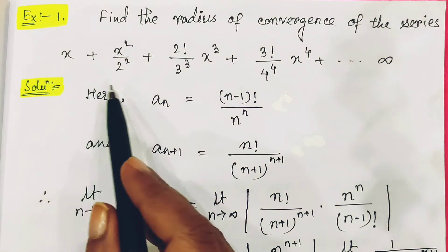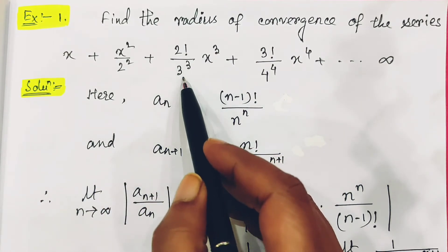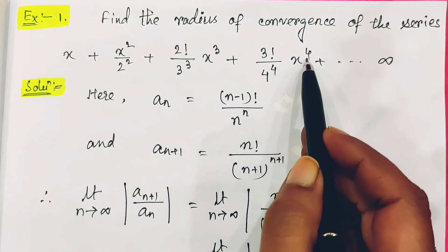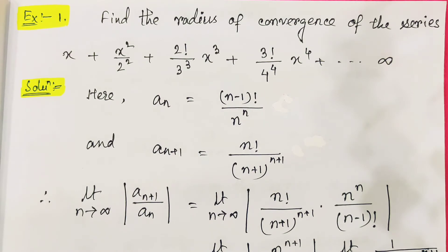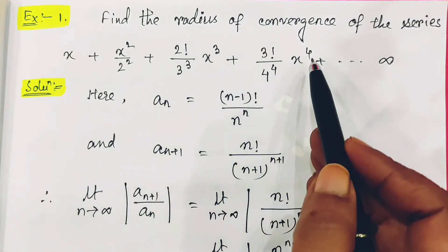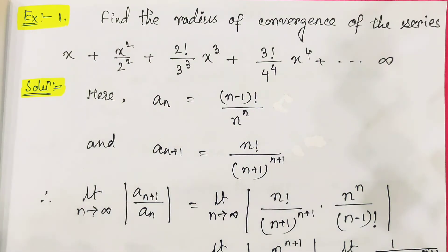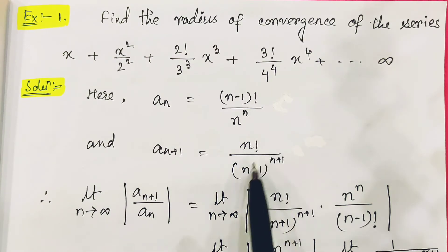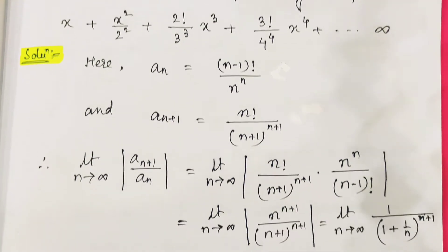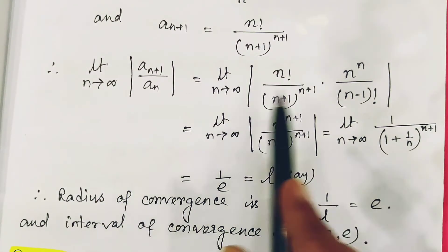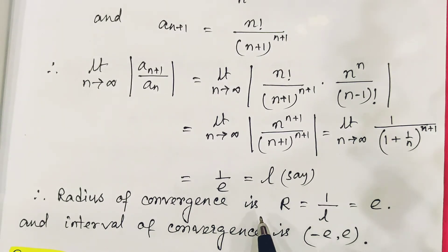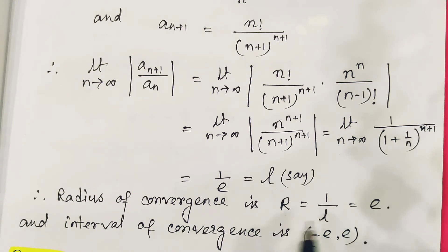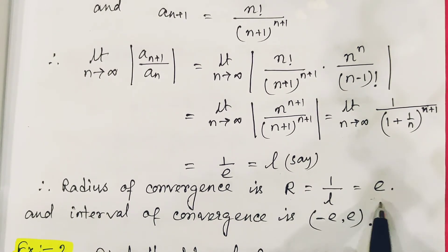First worked example: the series is x + x²/2² + (2!/3³)x³ + (3!/4⁴)x⁴ + ... Here a_n = (n−1)!/n^n and a_{n+1} = n!/(n+1)^{n+1}. Applying the ratio test, the limiting value comes out to 1/e. Therefore, the radius of convergence R equals e (the reciprocal), and the interval of convergence is (−e, +e).